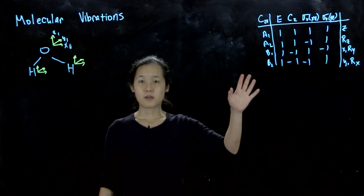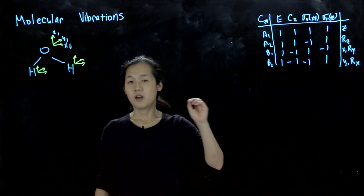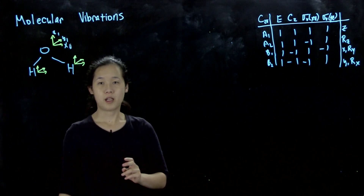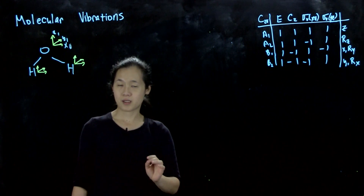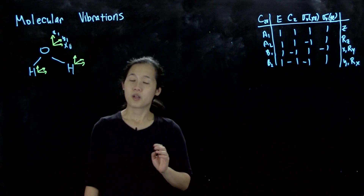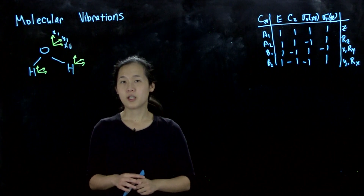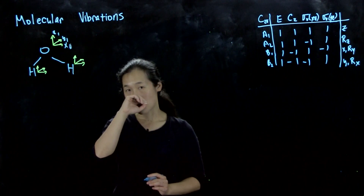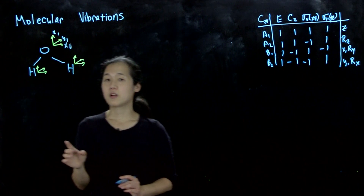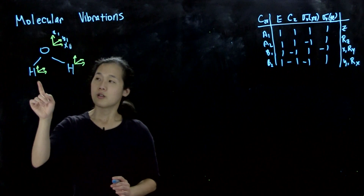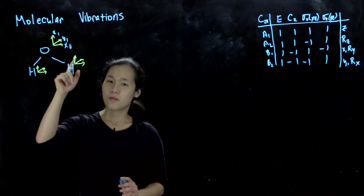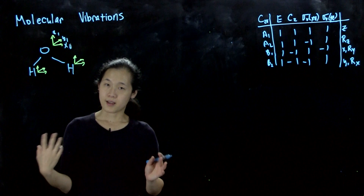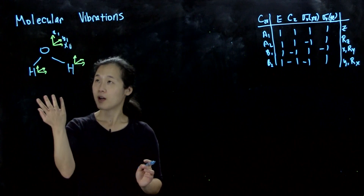Now that we have character tables and can reduce representations down to a linear combination of irreducible representations, we can apply this towards treating things like molecular motion. We treated three degrees of freedom for each atom because every atom can move independently, even though they are bonded.